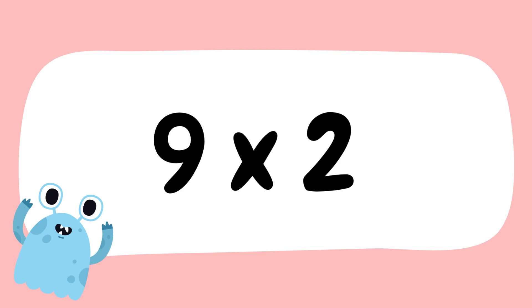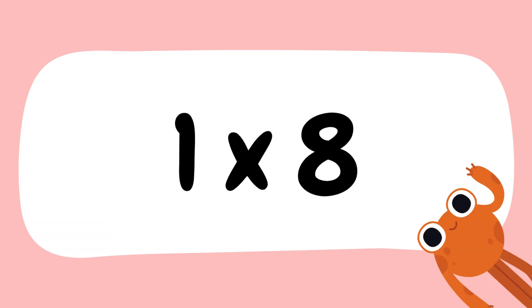9 multiply by 2 is equal to how much? 18. Now the next one is 1 multiply by 8. 1 multiply by 8 is equal to 8.